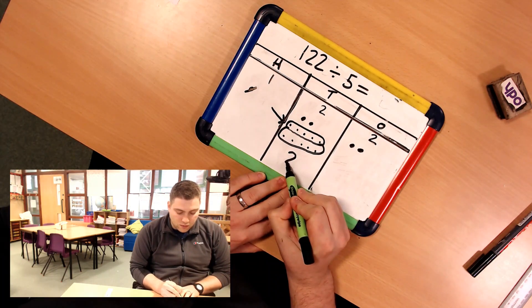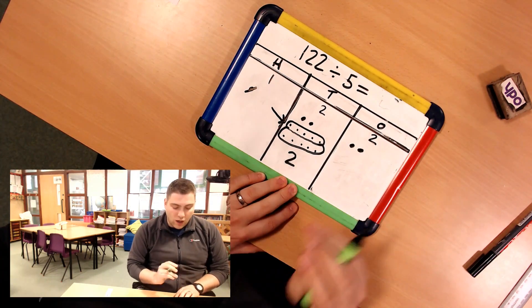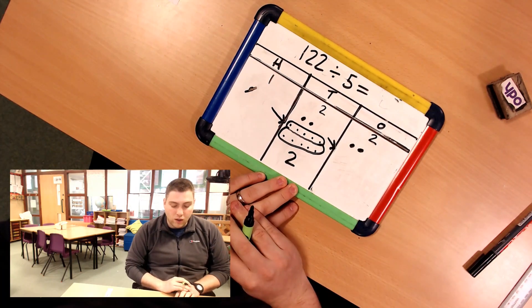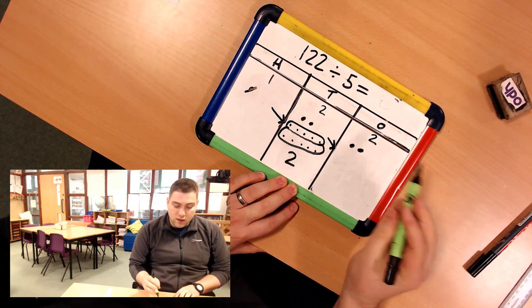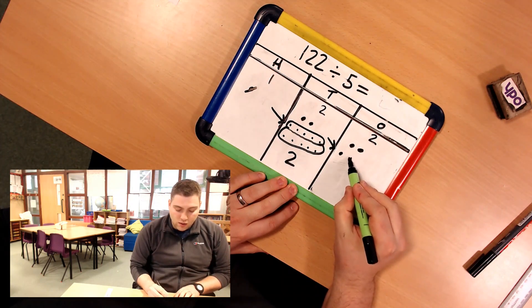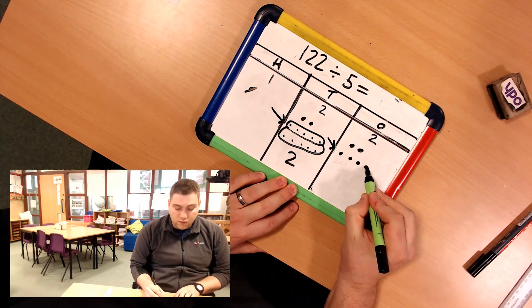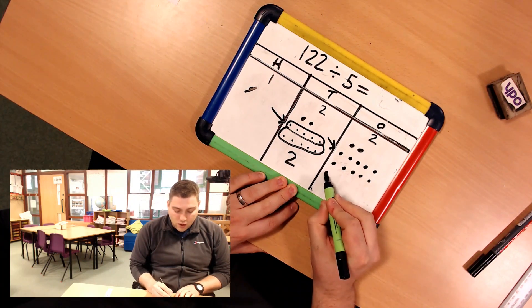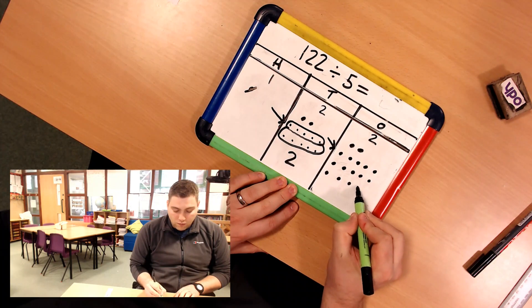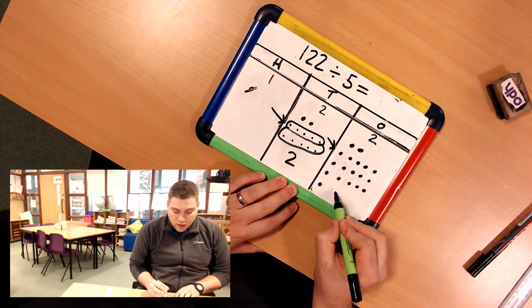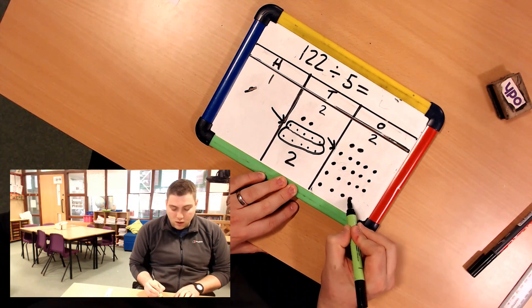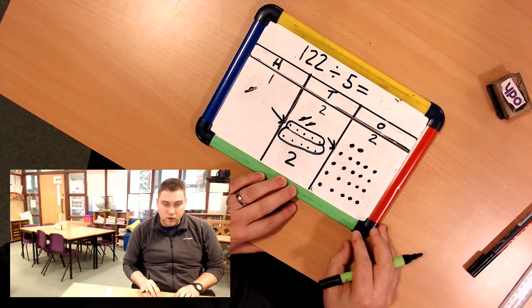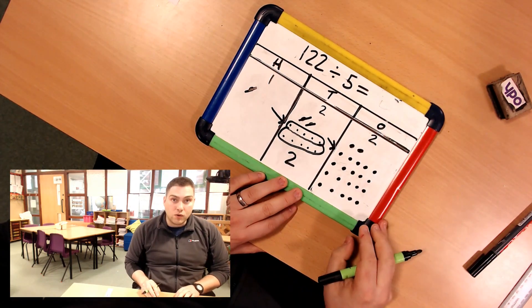Equal groups of 5. I have 2 equal groups of 5, but I have 2 that are left over. So I now need to exchange that into my 1s. 2 tens into 1s gives me 20 1s, 4, 5, 6, 7, 8, 9, 10, 11, 12, 13, 14, 15, 16, 17, 18, 19, 20. Cross out these 2 tens so I know that I've used them.